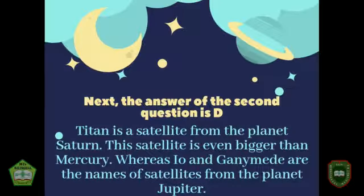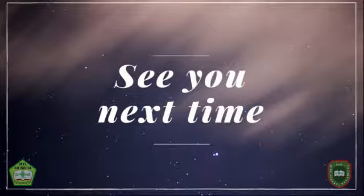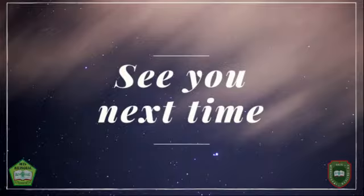The answer to the second question is D. Titan is a satellite from the planet Saturn — this satellite is even bigger than Mercury. Io and Ganymede are the names of satellites from the planet Jupiter. I hope you can enjoy this video. Bye bye!